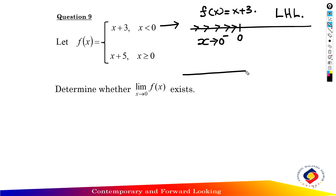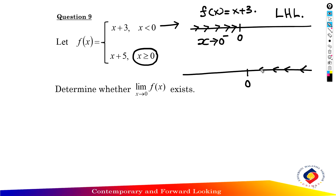For the second part of the function, f(x) equals x plus 5. Drawing the number line, the domain is greater than or equal to 0. From the right of the function, x is approaching 0, and f(x) equals x plus 5.